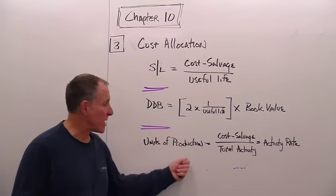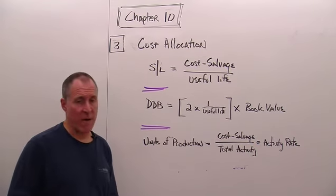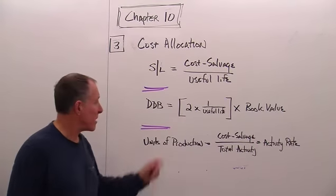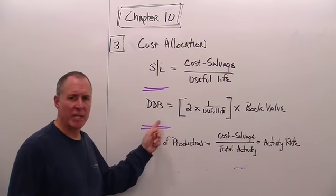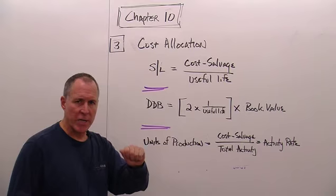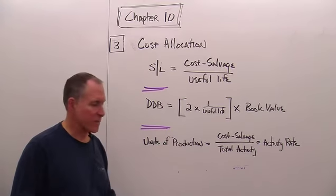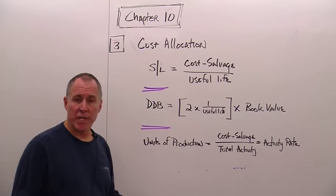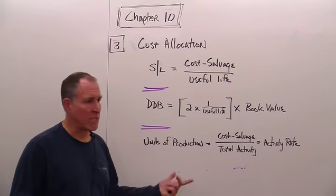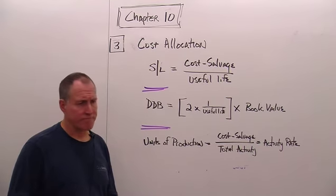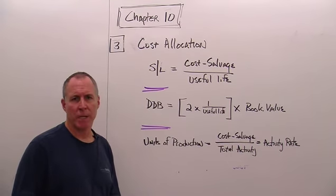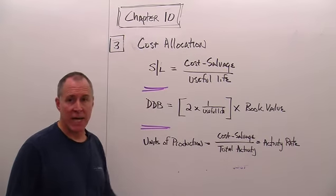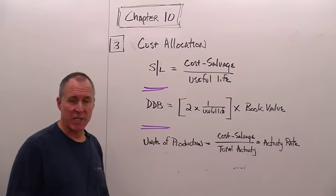With straight line, we get the same amount each year. Double declining balance is an accelerated method — more depreciation in earlier years, less in later years. With units of production, we depreciate as we use the asset: if we use it a lot, there's a lot of depreciation; if we use it very little, there's very little depreciation. Let's put the answers to each of these on the board.